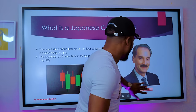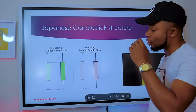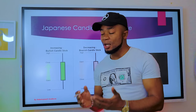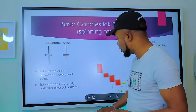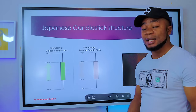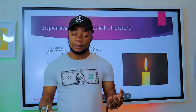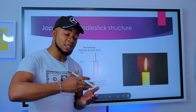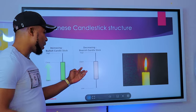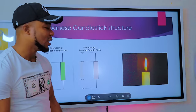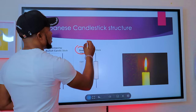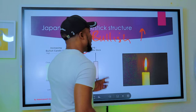Let's go to the Japanese candlestick structure — also called the anatomy of a Japanese candlestick. We have a bullish candlestick and a bearish candlestick. A bullish candle is a green candle, meaning the market was in an increasing state — when buyers were active and the market was going up. A bearish candle means the market was actually going down.